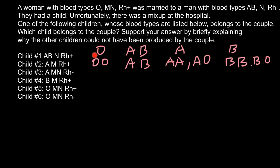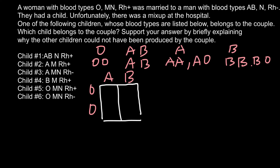Female phenotype is O with genotype OO, and male phenotype is AB with genotype AB. Building a simple Punnett square, we can find what blood types the progeny can have. The results are AO, AO, BO, and BO — so 50% of the progeny would belong to blood group A and the other 50% to blood group B. Only these two phenotypic blood groups are possible in the progeny.